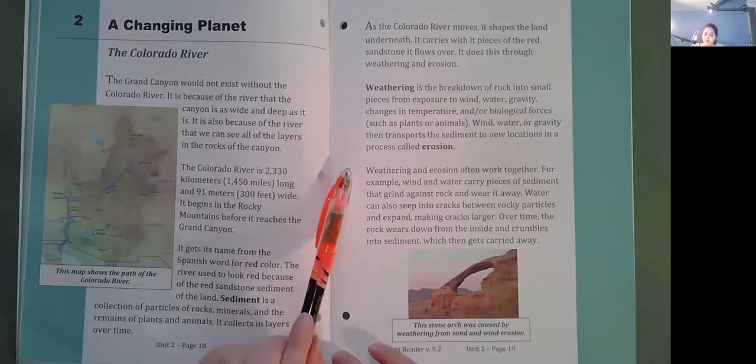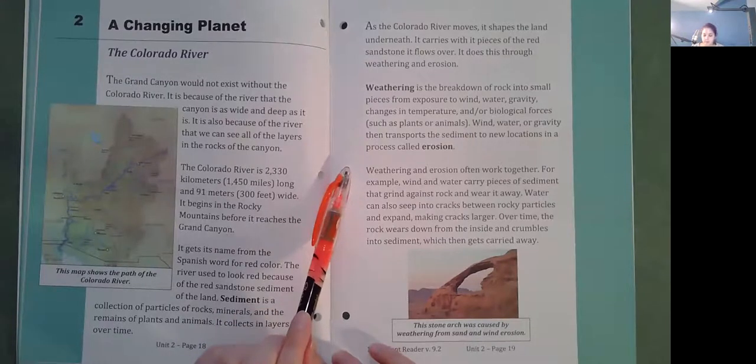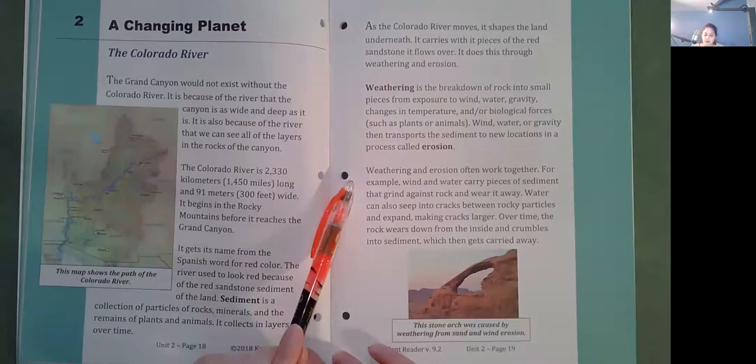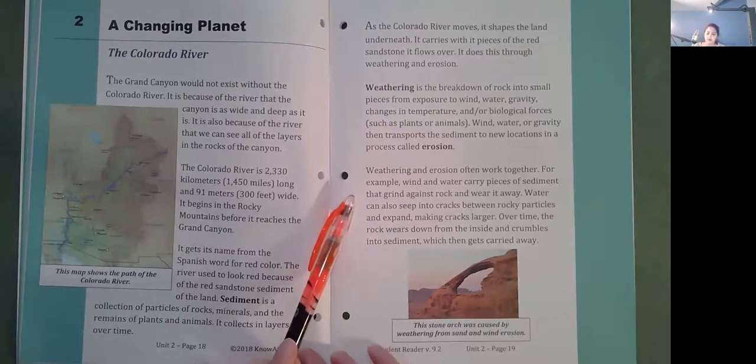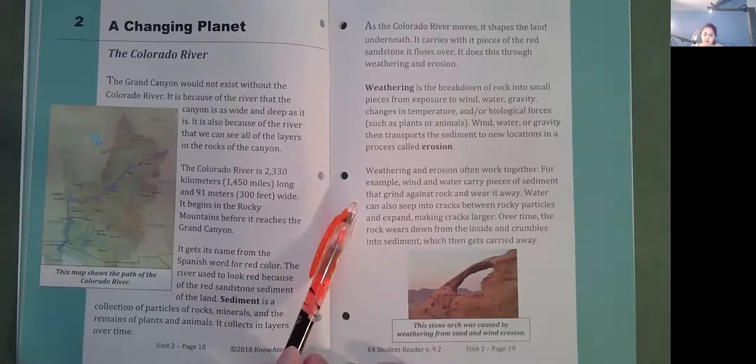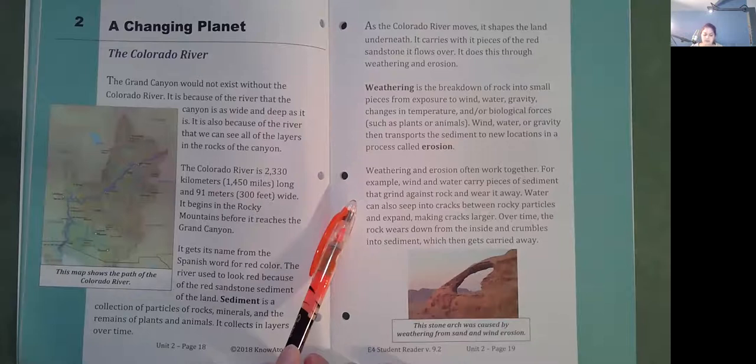Weathering and erosion often work together. For example, wind and water carry pieces of sediment that grind against rock and wear it away. Water can also seep into cracks between rocky particles and expand, making cracks larger. Over time, the rock wears down from the inside and crumbles into sediment, which then gets carried away.